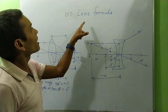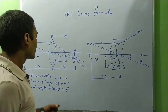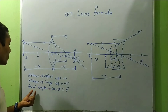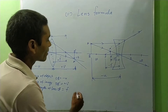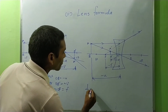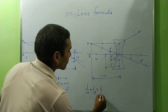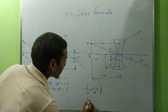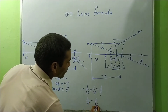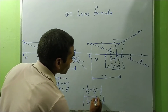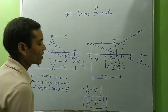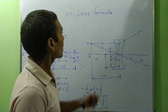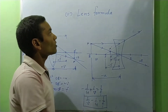The lens formula gives the relation between the object distance, image distance, and focal length of the lens. It is written as 1/V minus 1/U equals 1/F. This lens formula is very important for solving numerical problems. You must remember this formula as one question is always asked related to it.